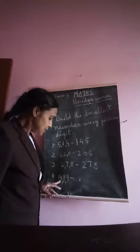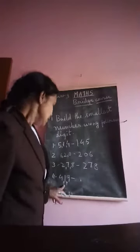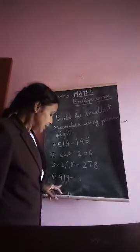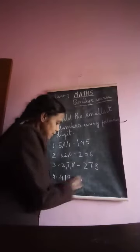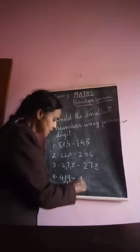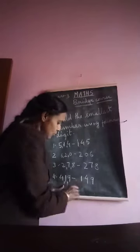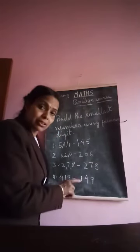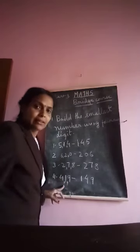Digits are 4, 1, and 9. You have to make the smallest number. The smallest digit is 1, then write 4, then write 9. So 149 is the smallest number built using digits 4, 1, and 9.